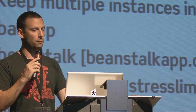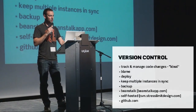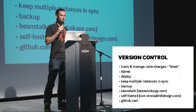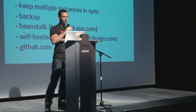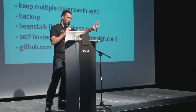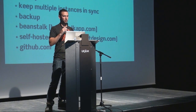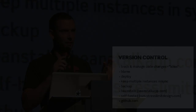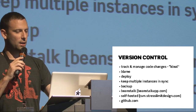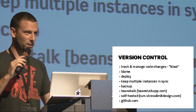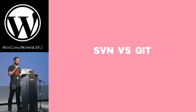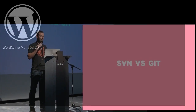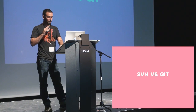A couple of specific places we use. Beanstalk I like because you can do Git, SVN, or Mercurial, and it does something neat — an actual FTP deploy of your versioned code. So if people don't support SVN or Git on their production environment, you can push it up automatically and still avoid the margin of error from dragging things manually over FTP. There's also self-hosted SVN — we have svn.stresslimitdesign — and then there's GitHub. I love GitHub; it's a beautiful platform. It's the reason you've heard of Git today. There are really neat things you can do with GitHub, although there are annoying things about Git.